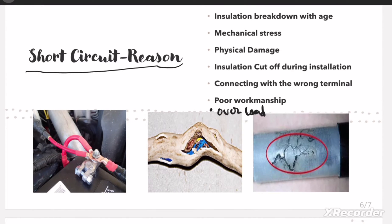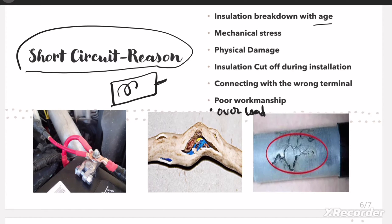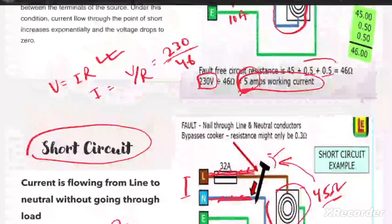Now let us understand some reasons for short circuit. First, insulation breakdown with age — when a motor is very old, the winding insulation degrades over time and becomes ineffective, creating a short circuit. Second, mechanical stress — due to mechanical stress, a cable can detach from its terminal and touch another terminal, leading to short circuit. Third, physical damage — as demonstrated, a nail puncturing the line and neutral wire creates a short circuit.